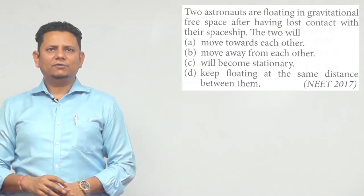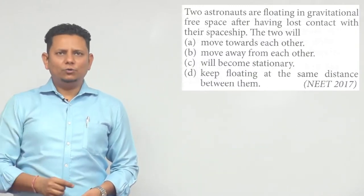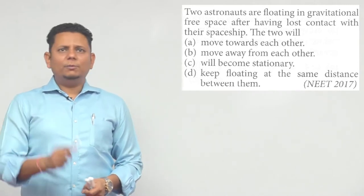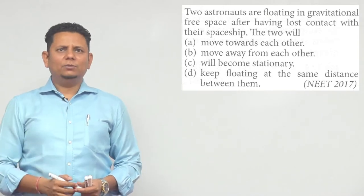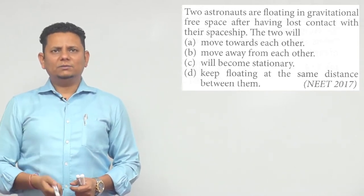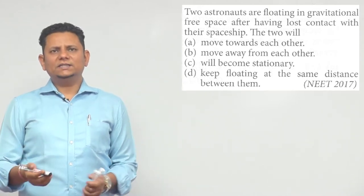Next question from NEET 2017: Two astronauts are floating in gravitational free space after having lost contact with their spaceship. The two will... Four options are given. First option: move towards each other. Second: move away from each other. Third: will become stationary. Fourth option: keep floating at the same distance between them.